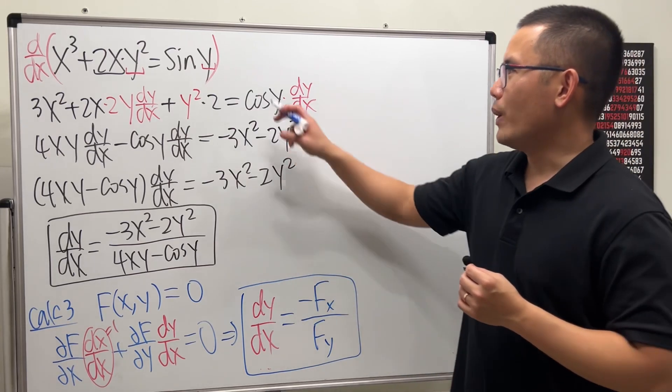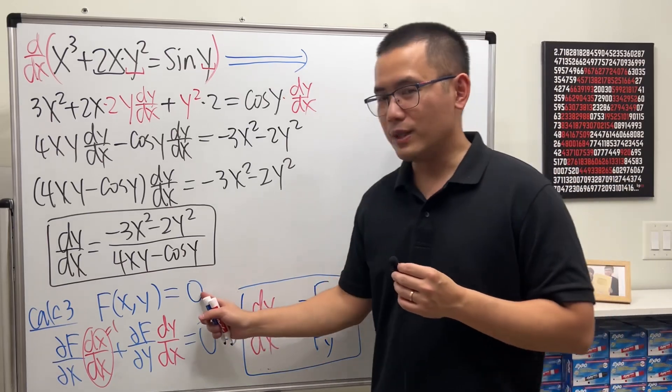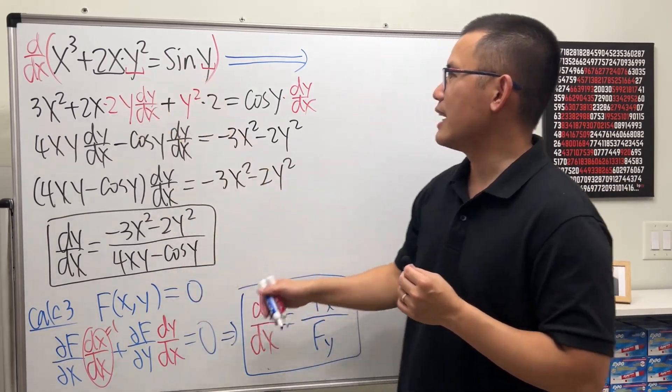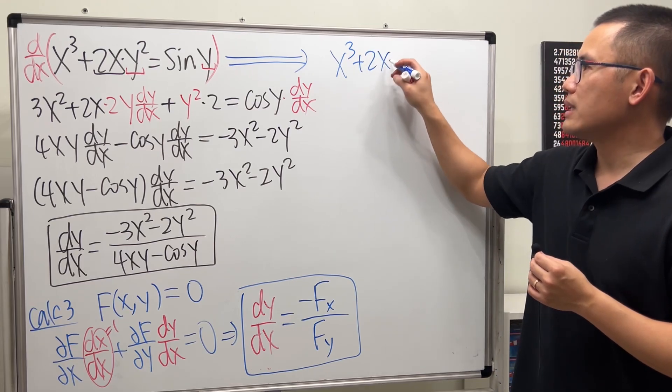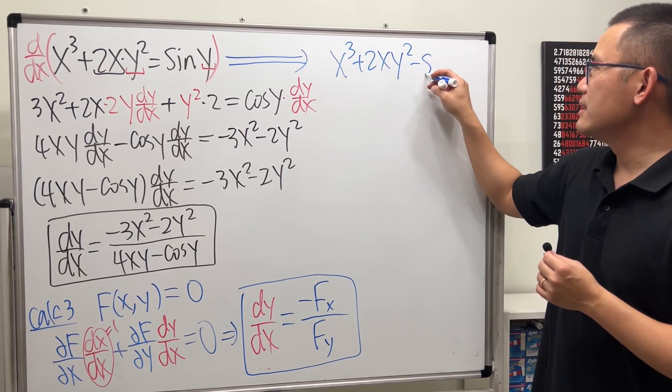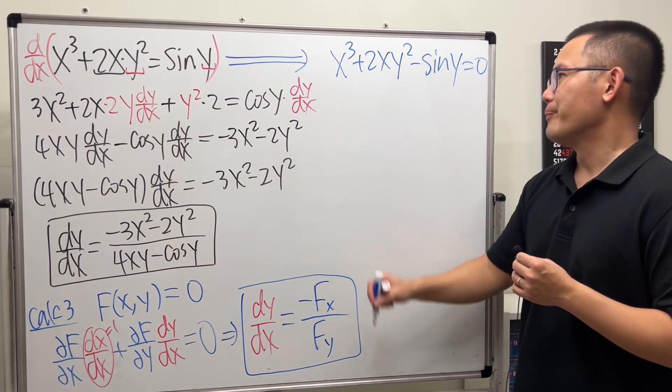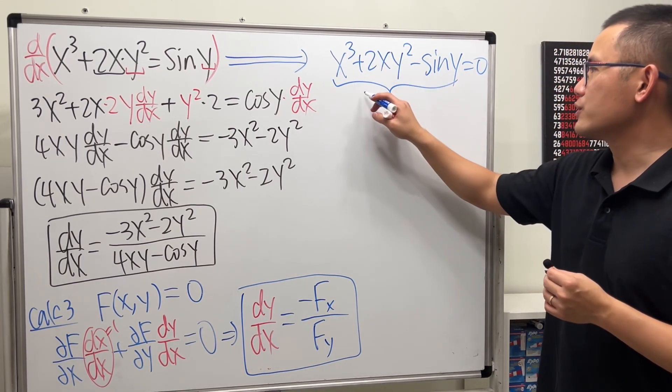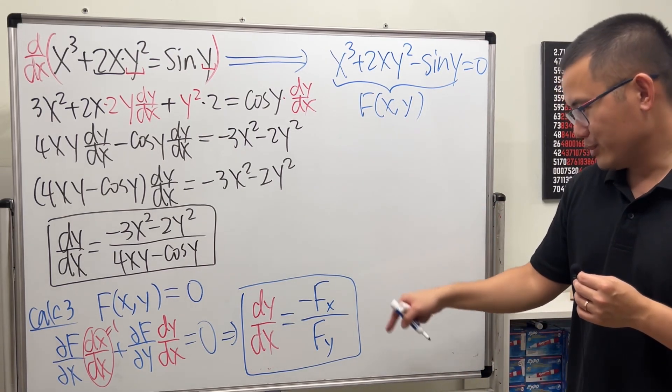So now, why don't we try that? Step 1: Make one side equal to 0. So put that to the other side. So here we have x cubed plus 2xy squared minus sine y, and that's equal to 0. Step 2: Call this to be our function f of x, y. Step 3: Use that formula.